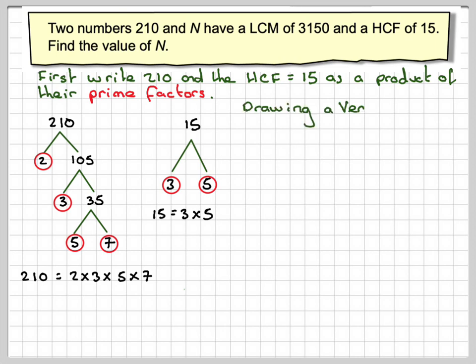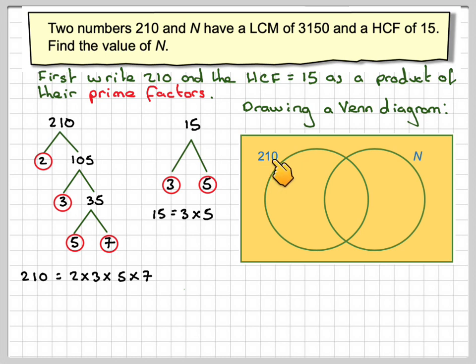Now if we draw a Venn diagram. So here's my Venn diagram. If all these represent 210, then all these represent the number N. So if we put in the HCF first, which is the common bit, three and five, and cross them off as we do it, then over here we must put two and a seven.